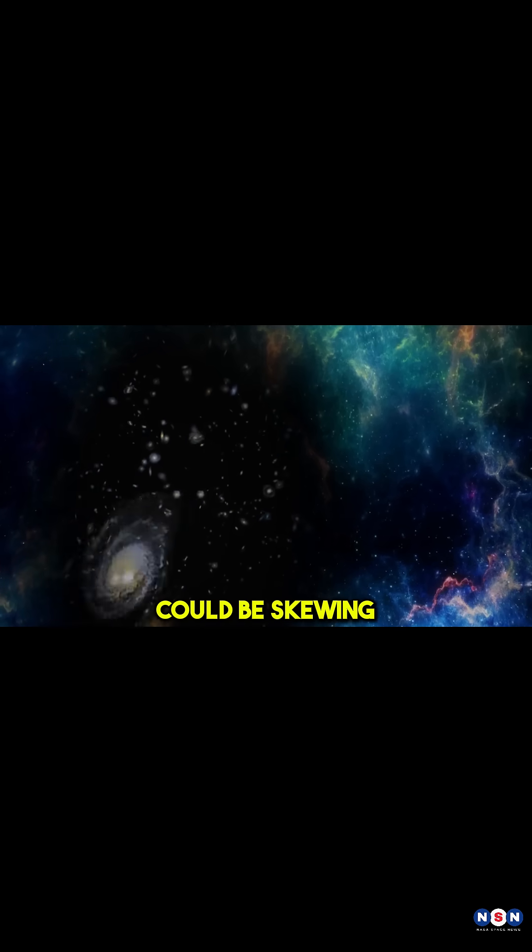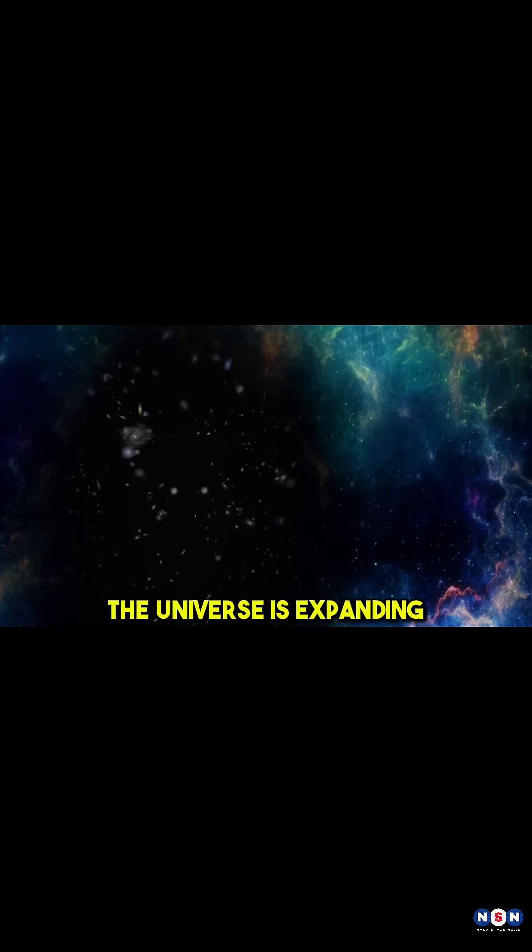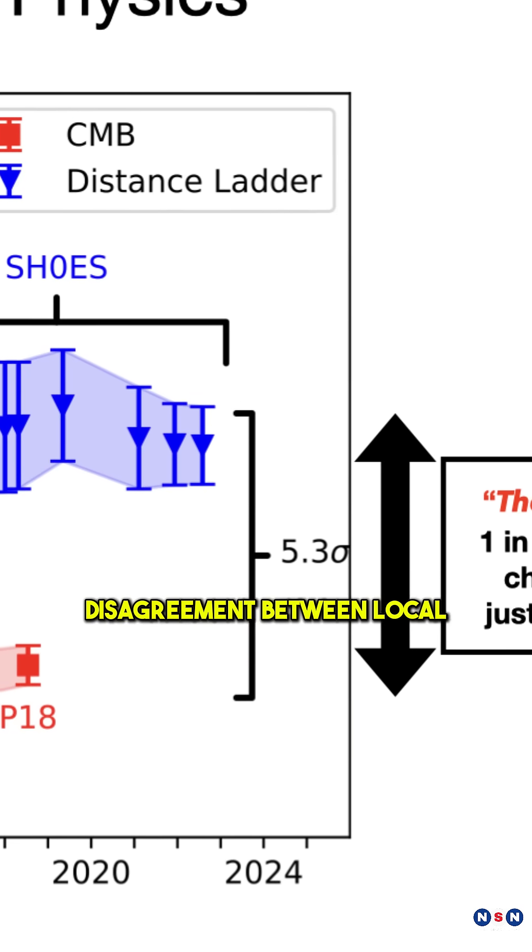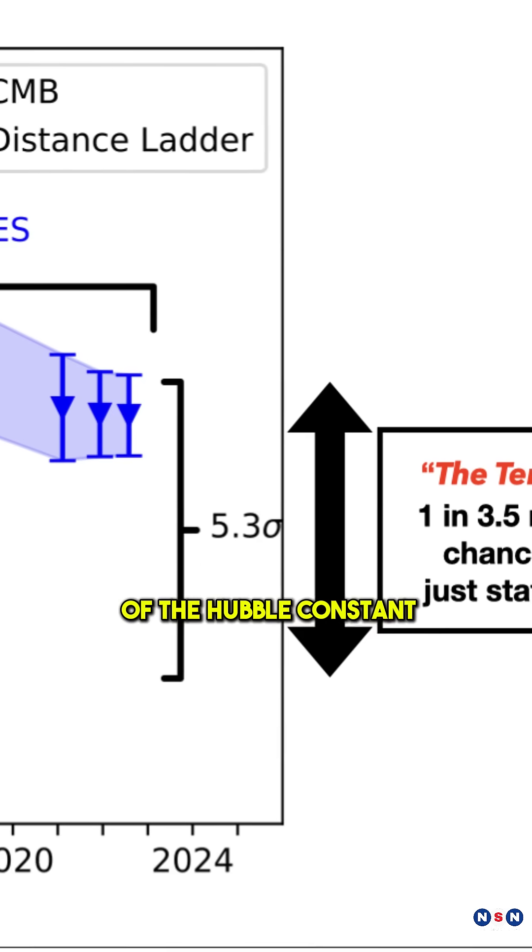This cosmic hole could be skewing measurements of how fast the universe is expanding, leading to the puzzling disagreement between local and cosmic observations of the Hubble constant.